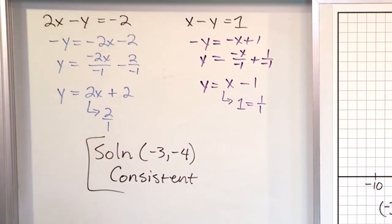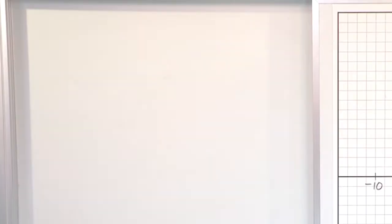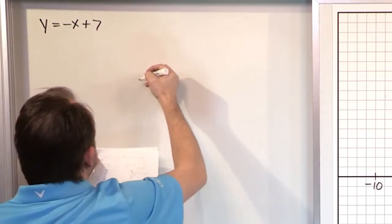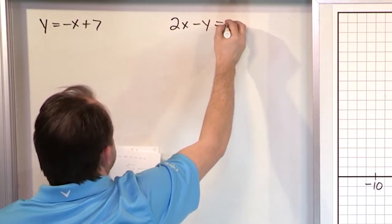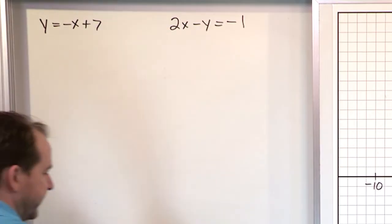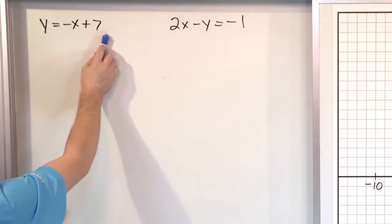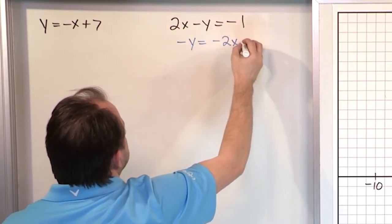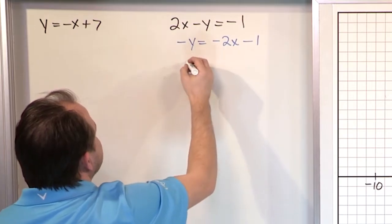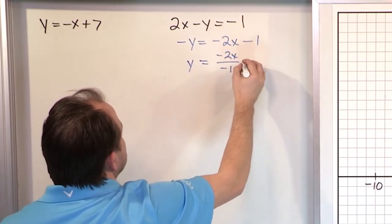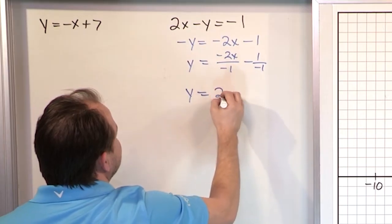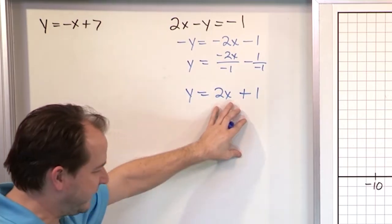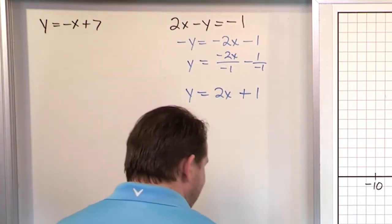That's one of the reasons why we do use graphing to solve these things, but we also use other techniques like substitution that we'll learn later. For the last problem: y is equal to negative x plus 7, and the other part of the system is 2x minus y equals negative 1. This one is already in mx plus b form. For the other one, we subtract 2x to get negative y equals negative 2x minus 1, then divide by negative 1 to get y equals 2x plus 1.